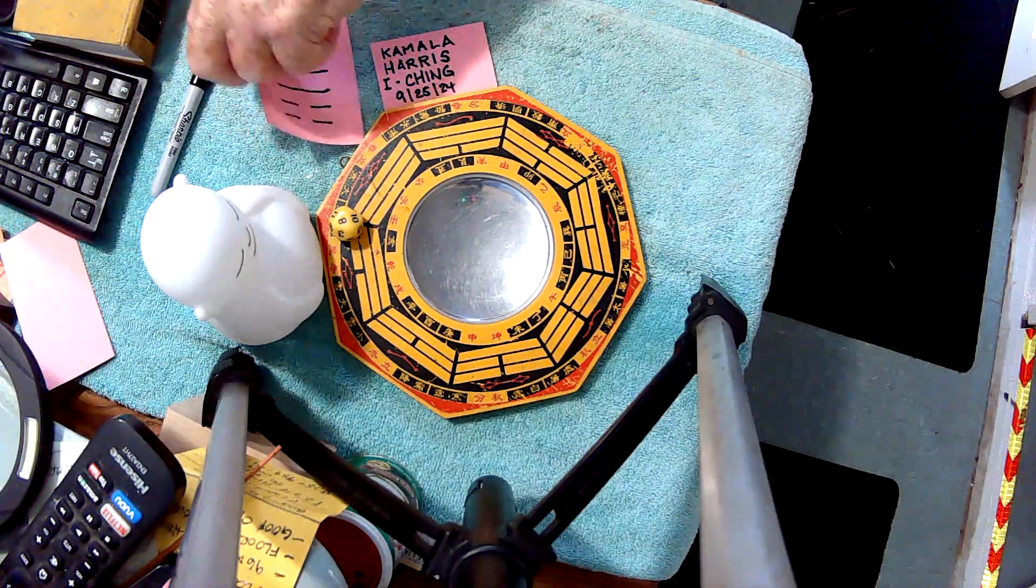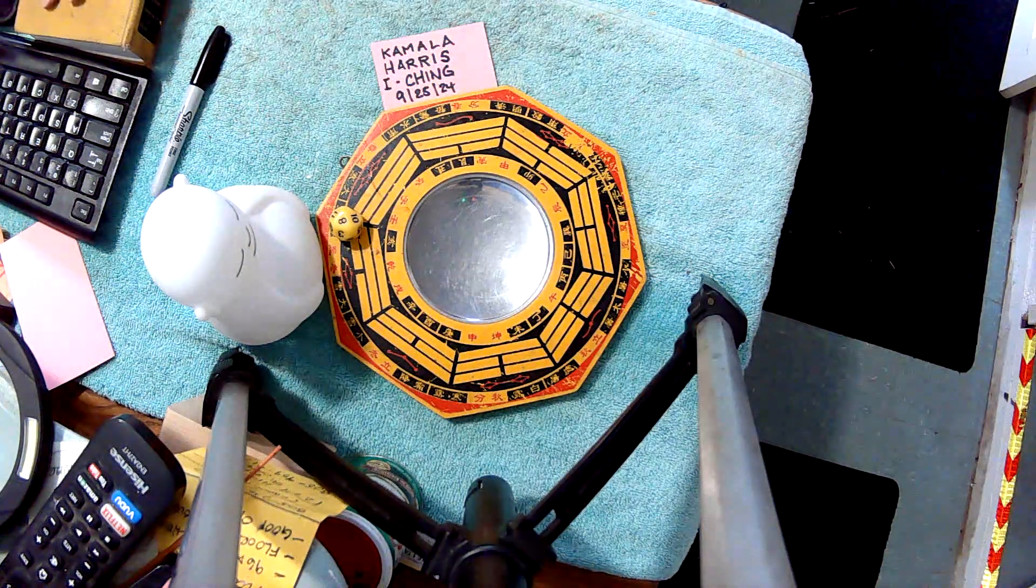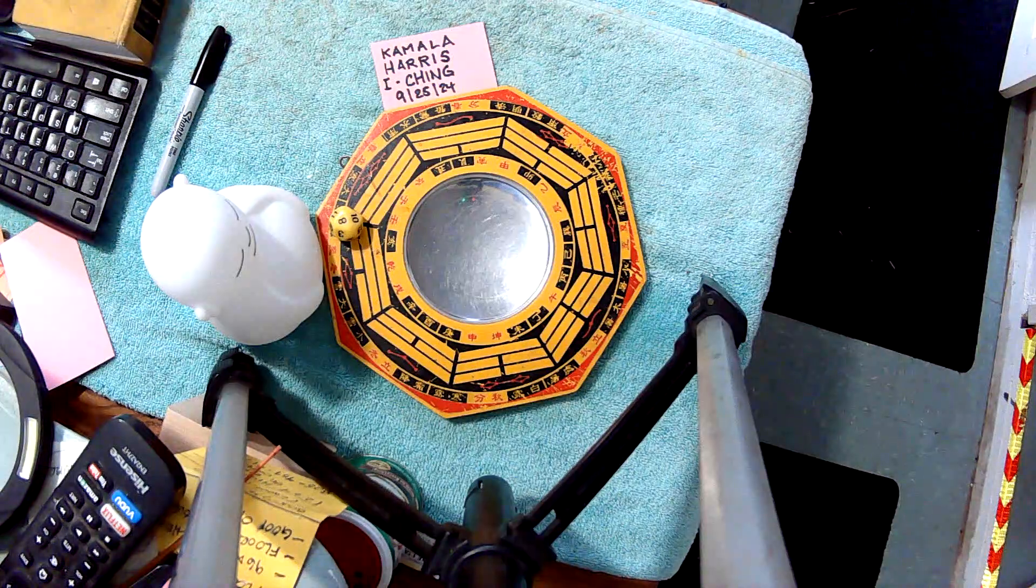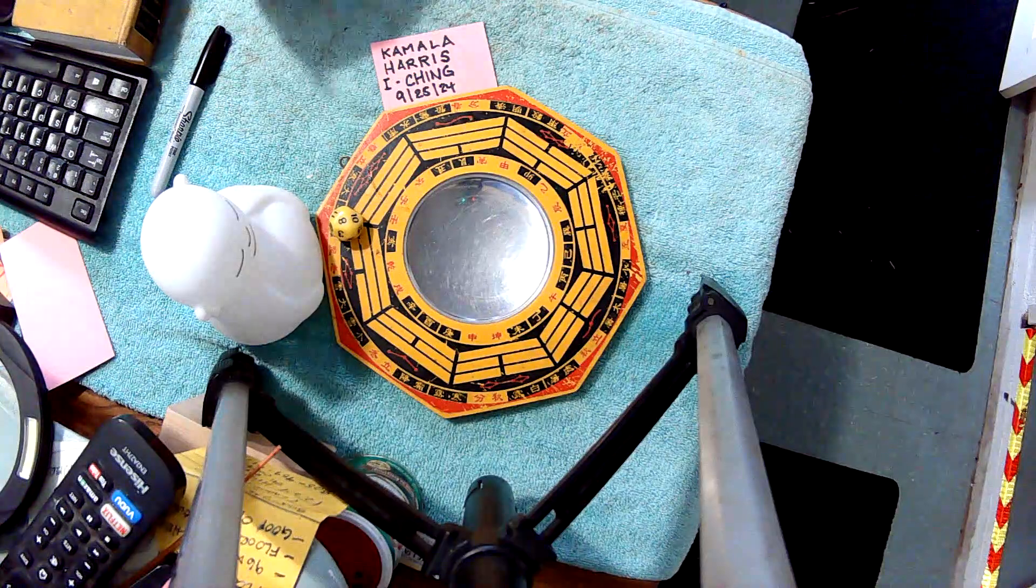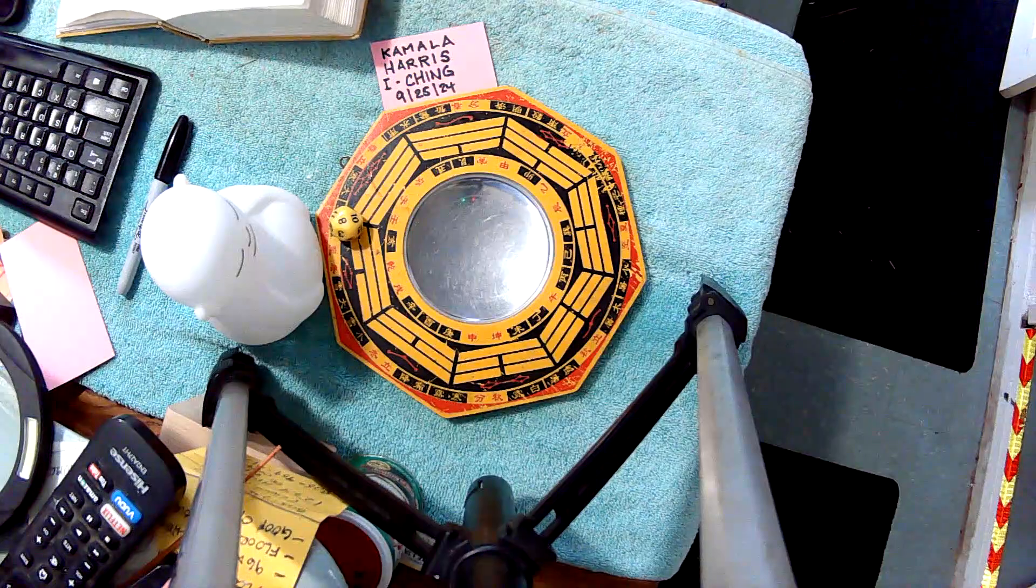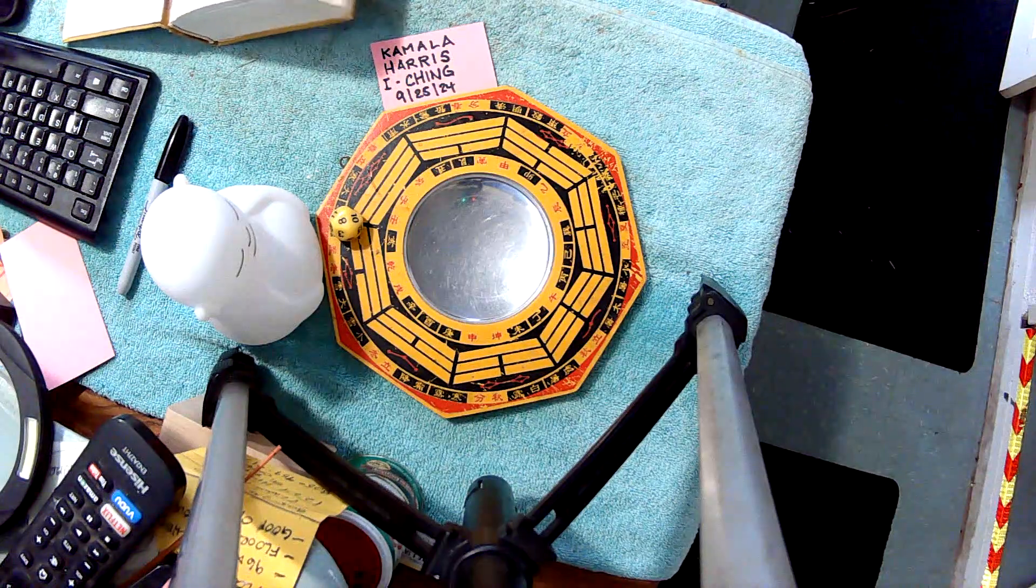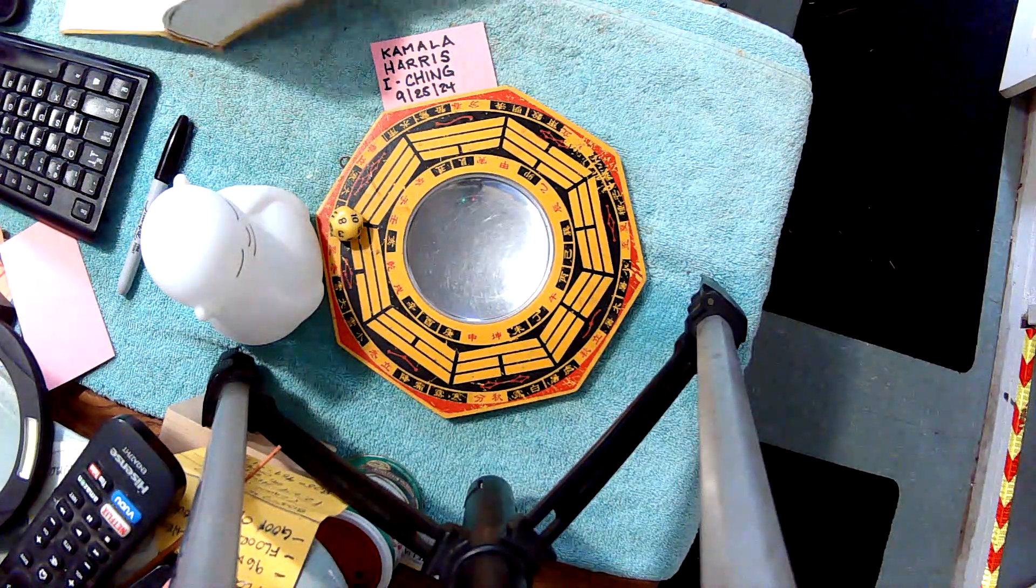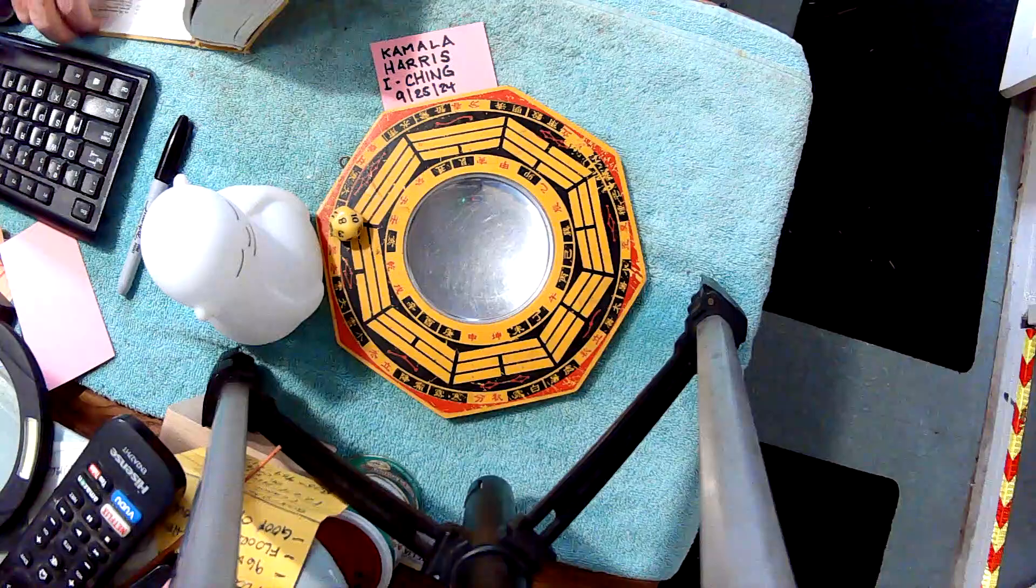I have to turn it around for me to get the book and look up what the one of 64 changing situations in life that is in the I Ching. This has no changing lines, which means it persists.